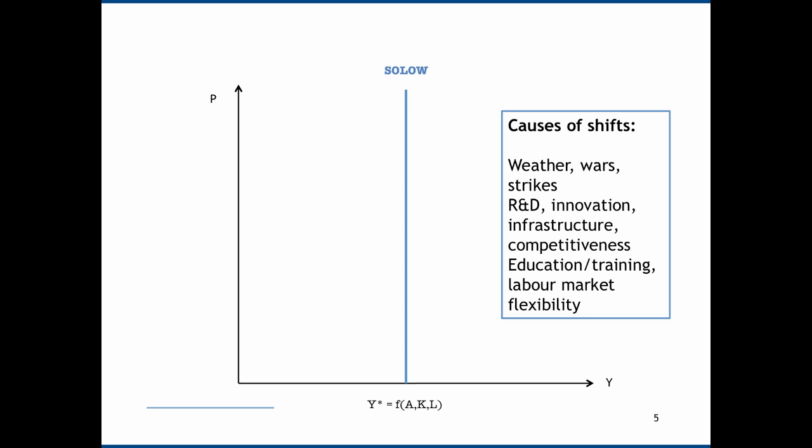Let's imagine that we have an increase in innovation. This constitutes a positive real shock or a positive productivity shock, and it will cause the Solo curve to shift outwards. Let's imagine that this puts Y star equal to 3%.